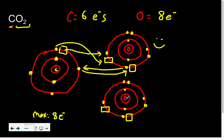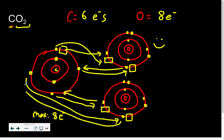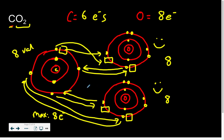Looking at carbon and the second oxygen: carbon has four of its own electrons, and gains two from each oxygen through sharing, totaling eight valence electrons. So all three atoms — carbon and both oxygens — are happy because they're stable. That's covalent bonding.